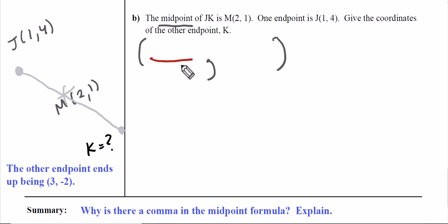If we set up the formula, we have one point - the endpoint (1, 4). That's one of the x values and one of the y values. As far as we know, coordinate K will have an x part and a y part, so let's make an x part and a y part.